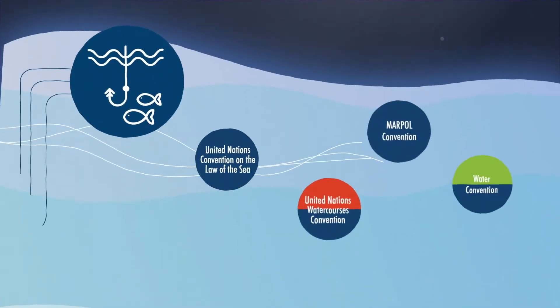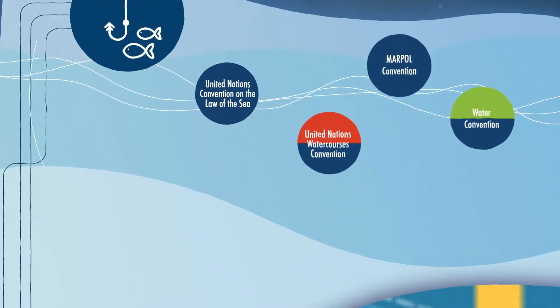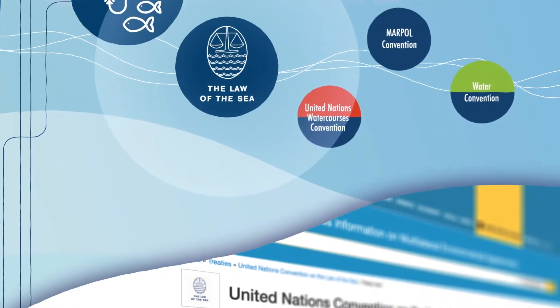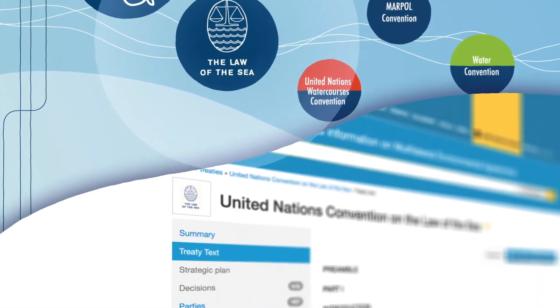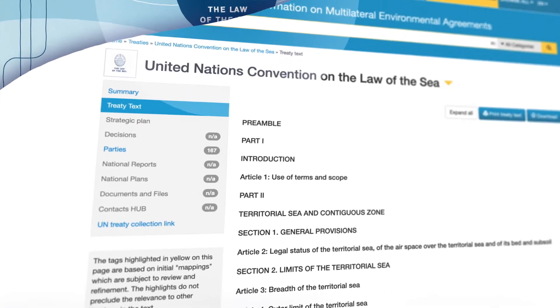Global and regional MEAs play an important role in addressing this issue. The United Nations Convention on the Law of the Sea places a broad obligation on states to prevent, reduce and control pollution from land entering marine environments.